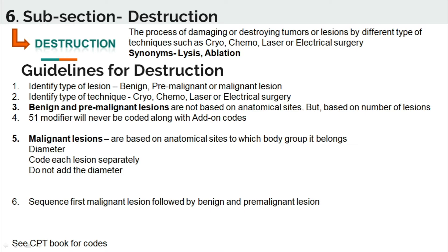Benign means non-cancerous cells which will not spread from one part of the body to another. Pre-malignant means cells which are in a developing or middle stage and will spread in the future. Malignant means cells which are very dangerous and can spread from one part of the body to another.